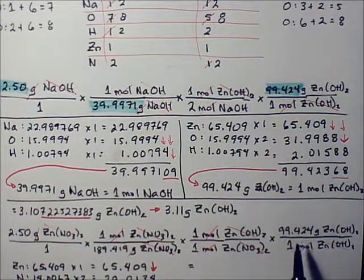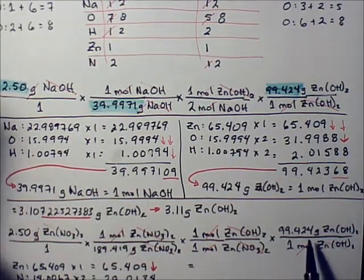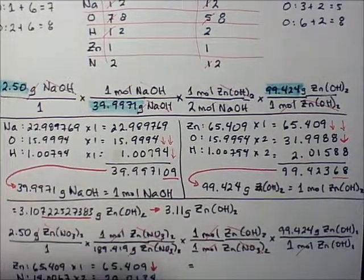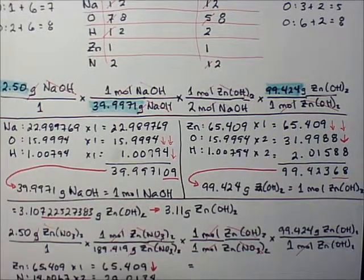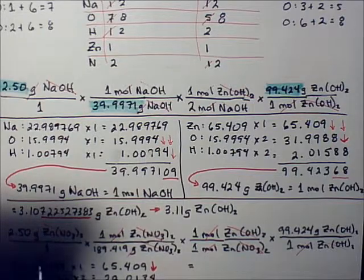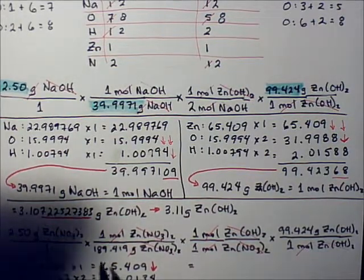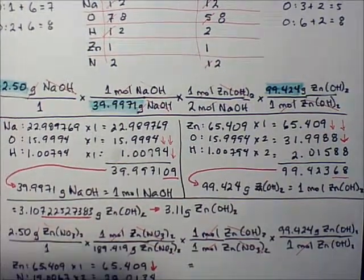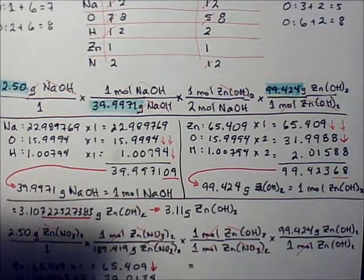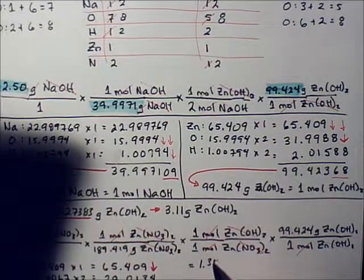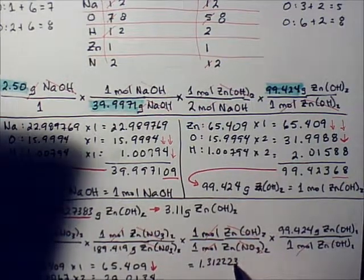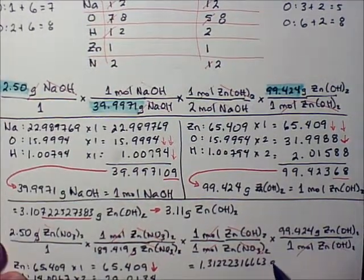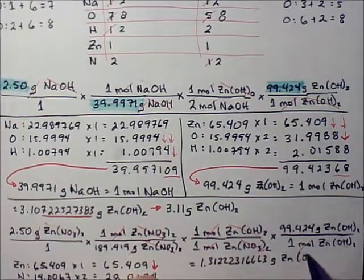So we're going to take 2.50 and multiply it by 99.424, hit enter, and then divide by this number. All the other numbers that we have in this problem are ones, so we don't have to worry about them. Using the same process, this times this, hit enter, then hit your divide key, and divide by this number on the bottom.